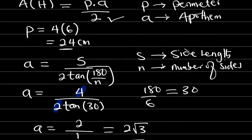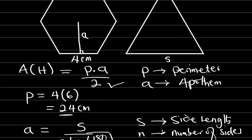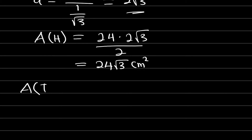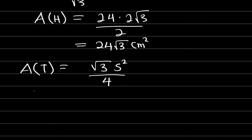Now let us go ahead and find the side length of the triangle. We know that the hexagon and the triangle have the same area. The area of an equilateral triangle has a special formula as well: √3 multiplied by the side length squared, divided by 4. Since they have the same area, we can say this is also equal to 24√3. So: 24√3 equals (√3 / 4) multiplied by s squared.